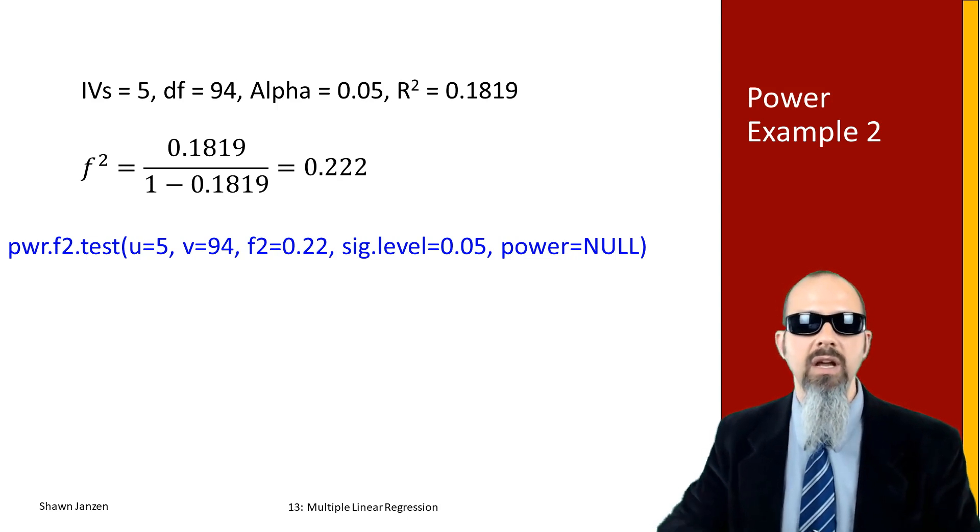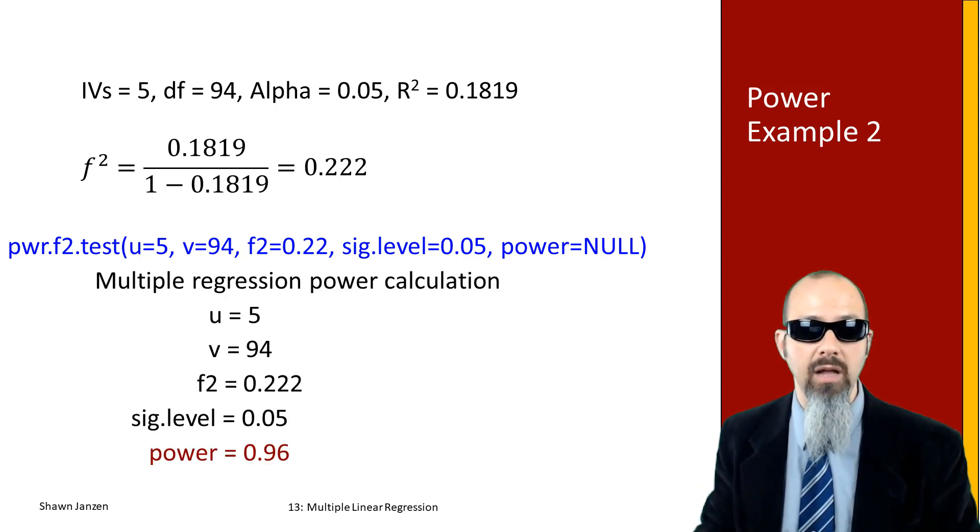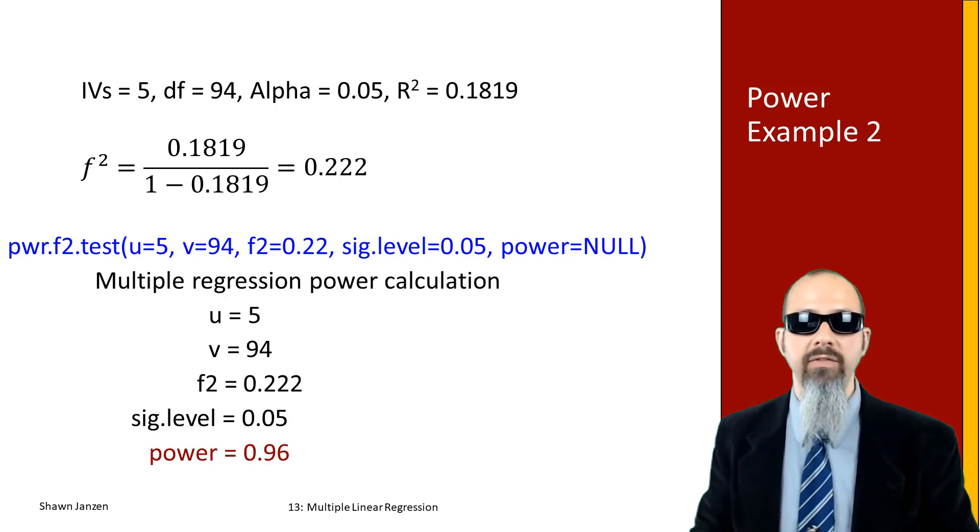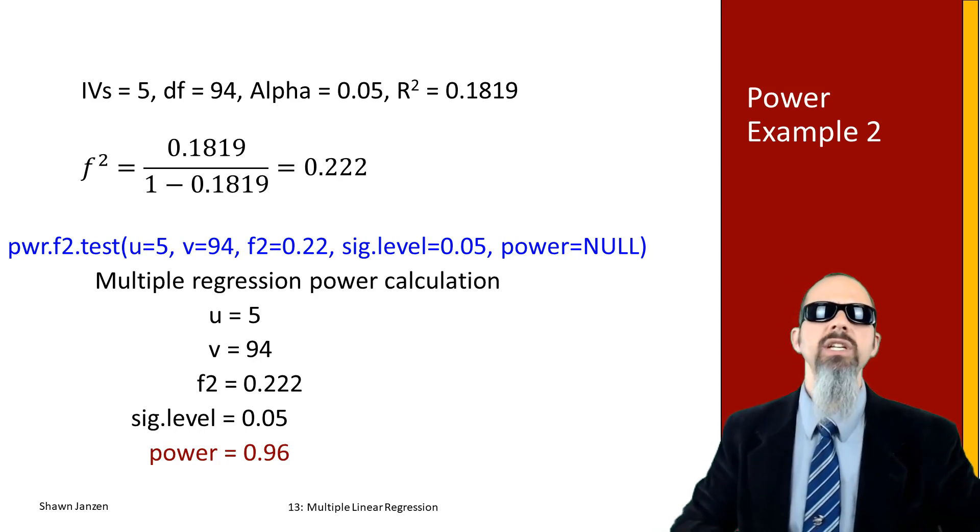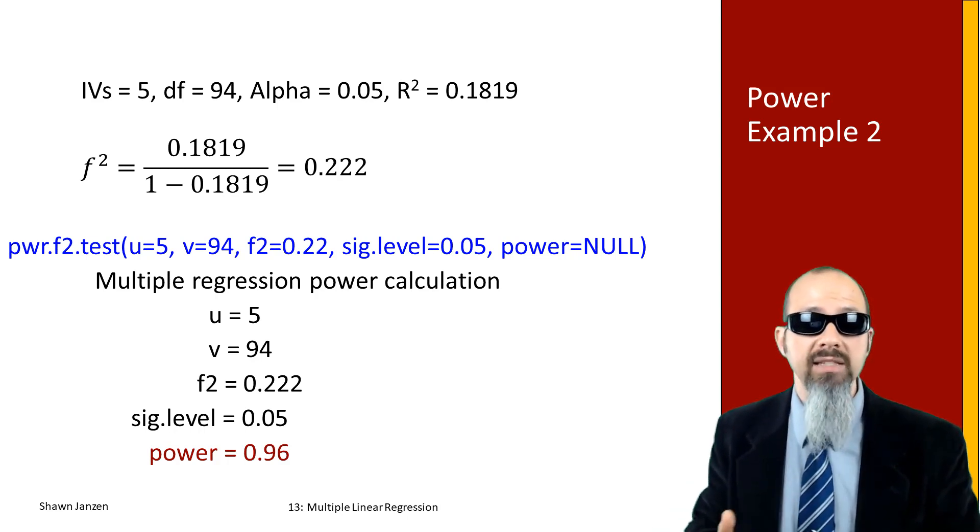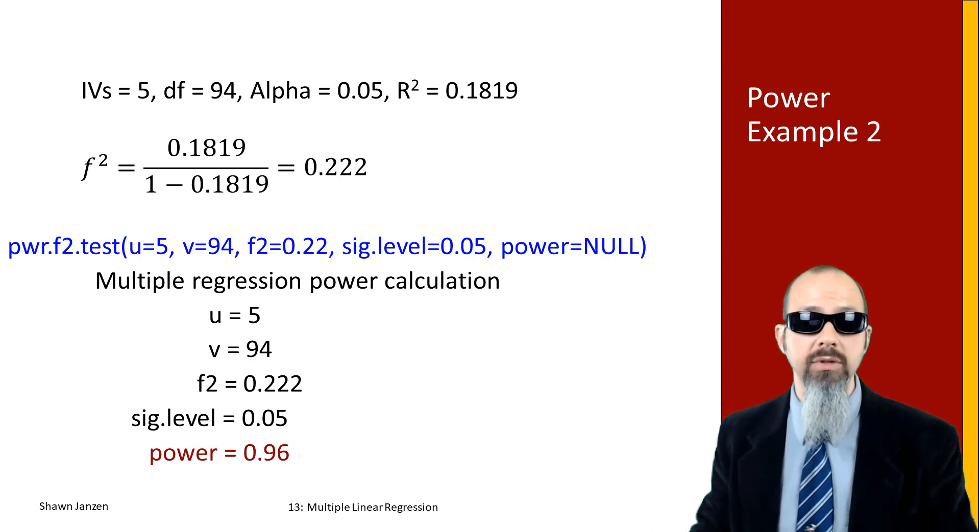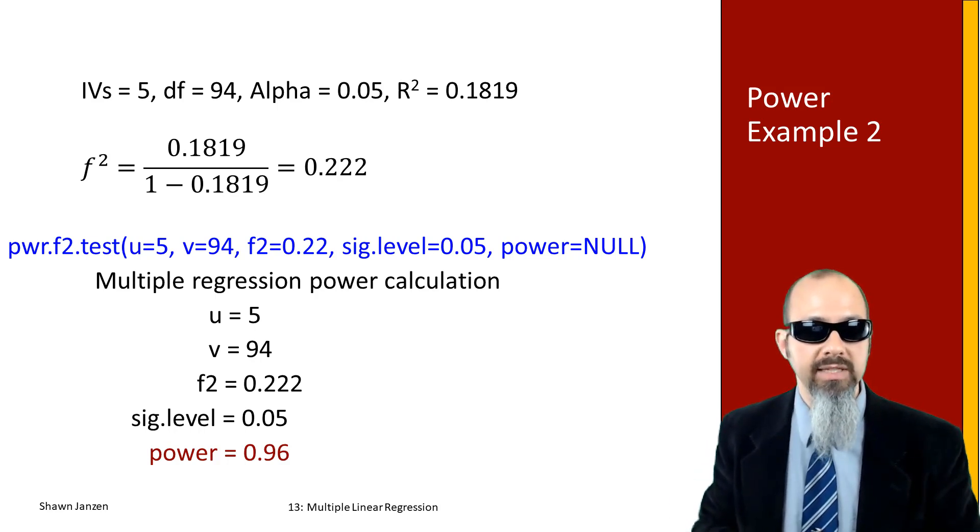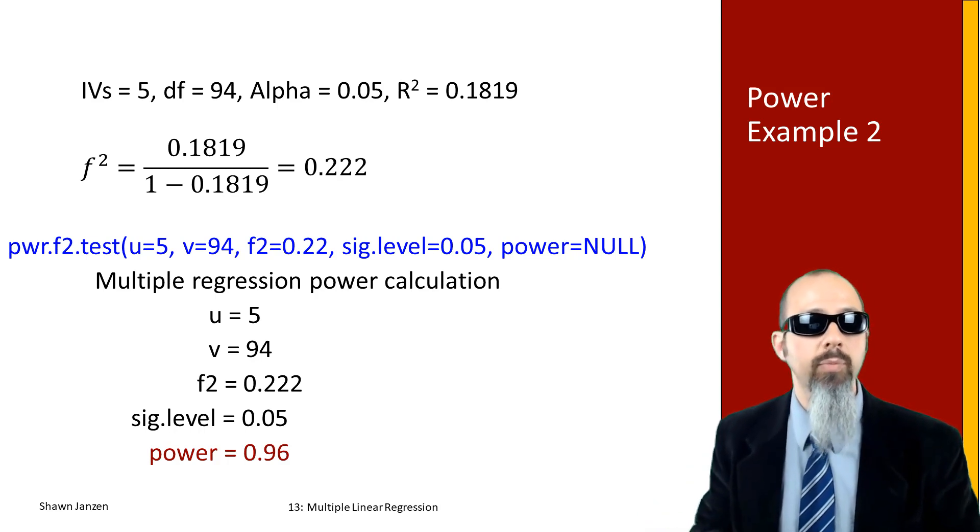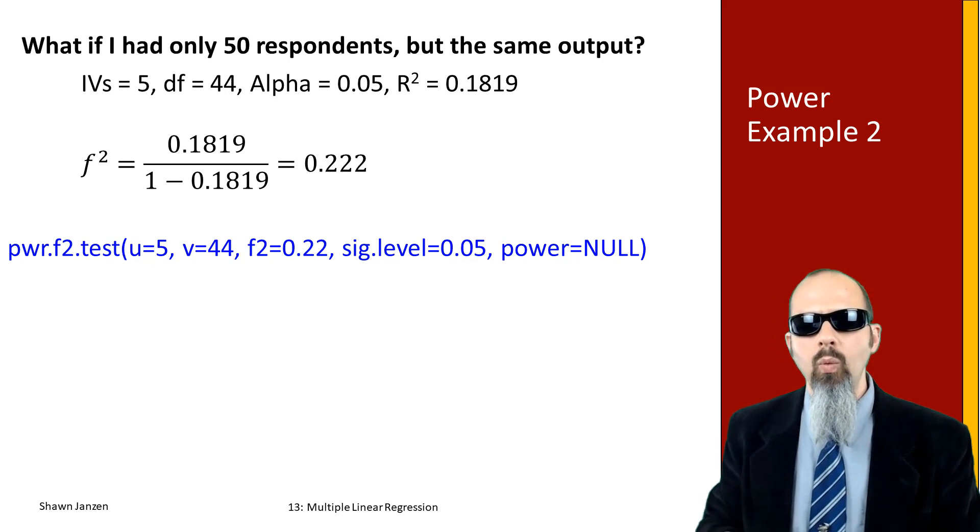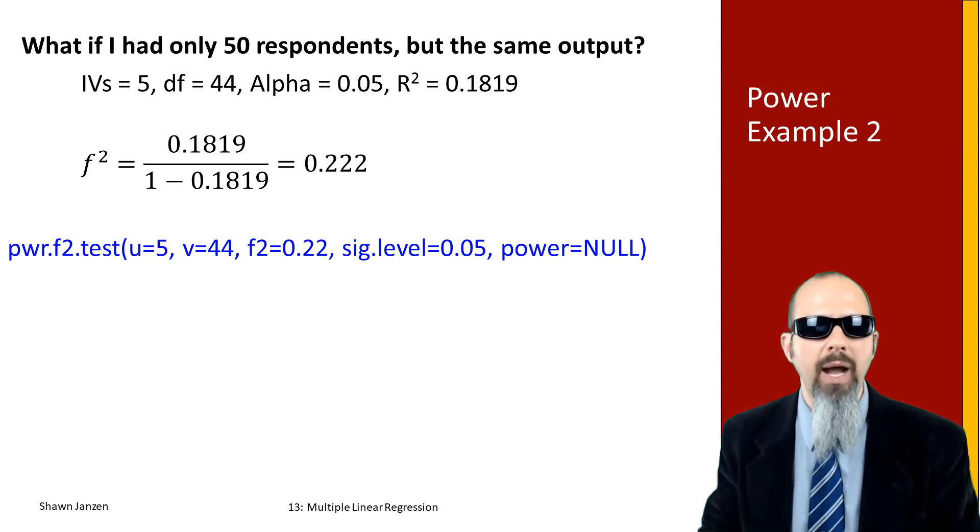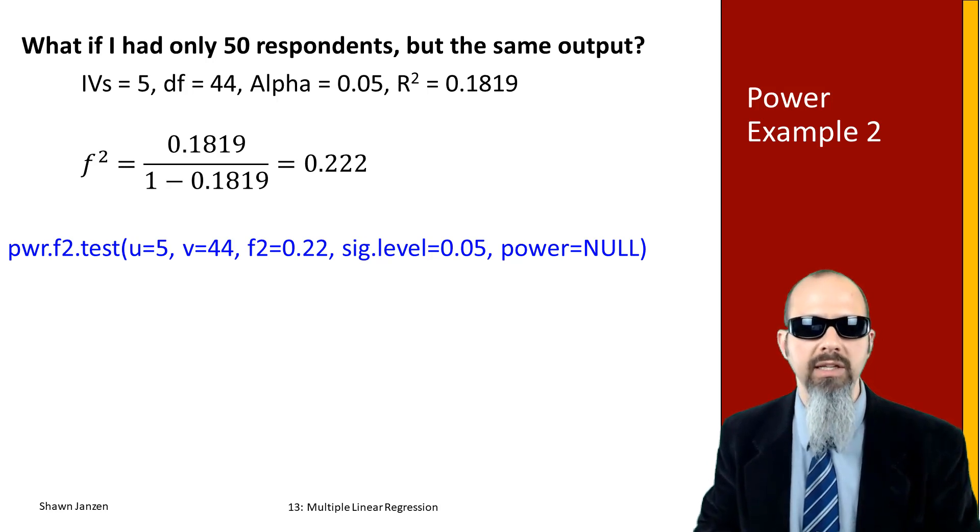I'm going to add in the values and leave power listed as null. That generates a power value of 0.96, which is huge. I don't have massive numbers here but I still have fantastically strong power. Five independent variables is quite common in multiple regression. 94 degrees of freedom means I've got a good-sized sample, but it's not gigantic, and I've only got a moderate effect size. Things are looking pretty good.